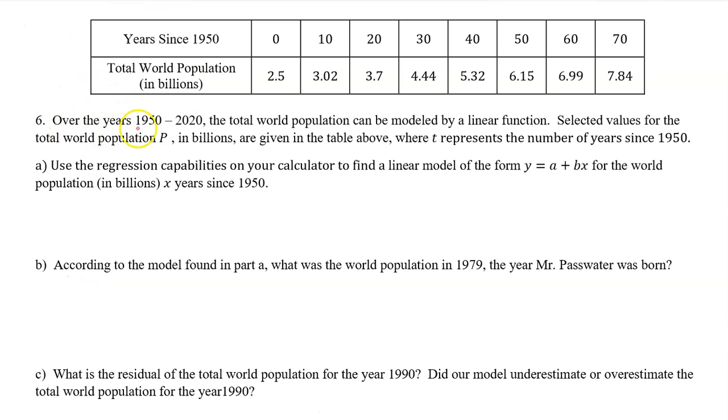Number six. Over the years between 1950 and 2020, the total world population can be modeled by a linear function. Selected values for the total world population p in billions are given in the table above, where t represents the number of years since 1950. Part A. Use the regression capabilities on your calculator to find a linear model of the form y equals a plus bx for the world population in billions, x years since 1950.